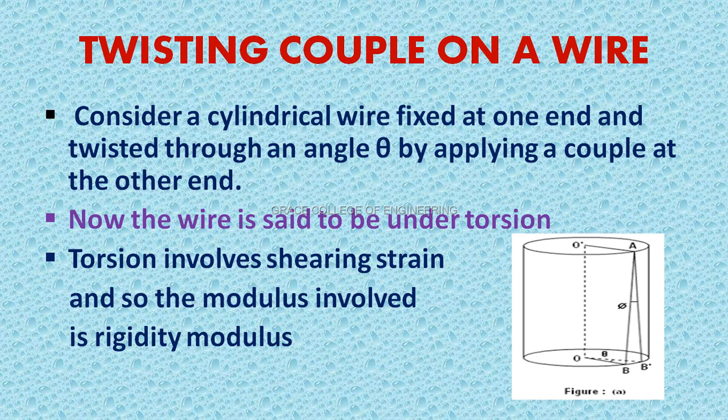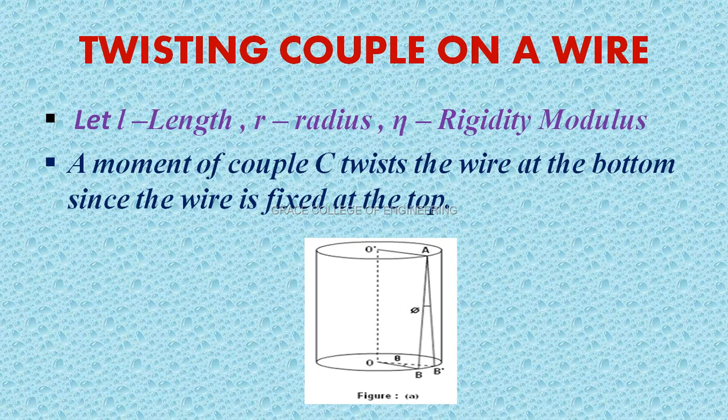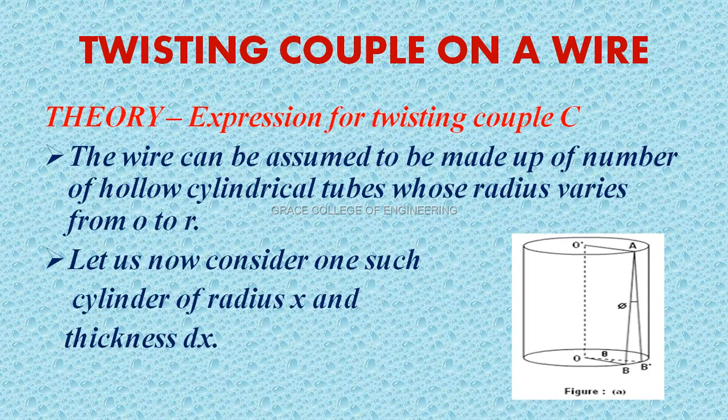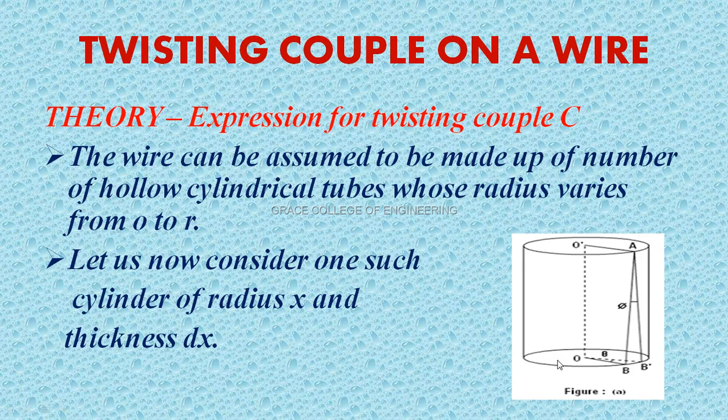Twisting is produced. Angle change is the shearing strain. Rigidity modulus is relevant when one end is fixed and the other is twisted, producing torsion. The wire has radius R and rigidity modulus which we are taking as eta.